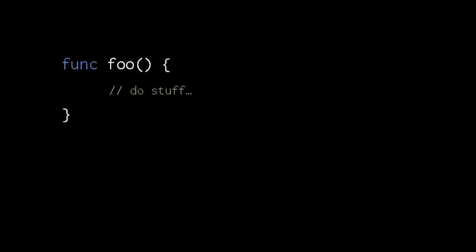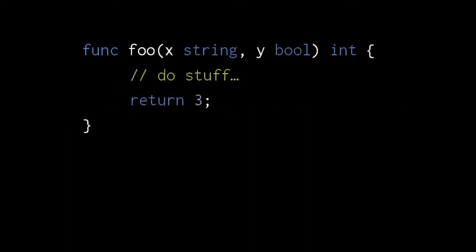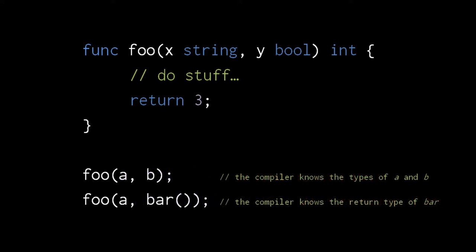Go function definitions should look quite familiar. The only difference from JavaScript here is that we write func instead of function. Unlike in JavaScript, this function foo can only be called with zero arguments, and because foo doesn't specify any return type, it cannot return anything. In contrast, this version of function foo takes two parameters, a string and a boolean, and returns an int. Whereas a function in dynamic languages like JavaScript can return different kinds of values, a function in a static language like Go has to declare what kind of value it returns. Having declared this function foo to return an int, the compiler will object if we attempt to return a string or some other kind of value. The compiler will also complain if we attempt to call this function with the wrong types of arguments or the wrong number of arguments.